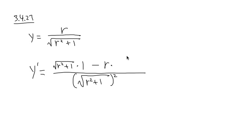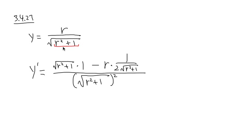You multiply by the derivative of the square root of r squared plus 1. The derivative of the square root of something is going to be 1 over 2 square root of the inside, so it's going to be r squared plus 1. Then you look at what's inside of the square root, r squared plus 1, and ask yourself what's the derivative of r squared plus 1 — that's going to be 2r. So you multiply by 2r.